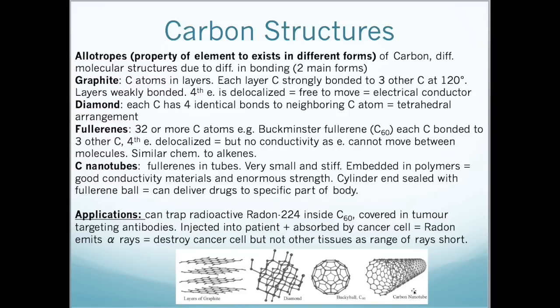And here is a picture of the layers of graphite. We can see the diamond, the tetrahedral arrangement, and every carbon is bonded to four identical carbon atoms. Here is a buckyball which is a type of fullerene, where we can trap medicines inside to deliver them to specific tissues. And a carbon nanotube.